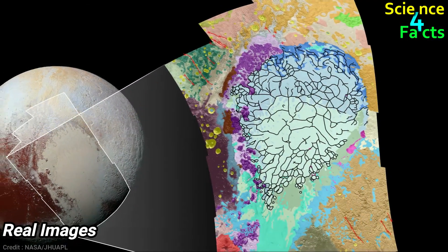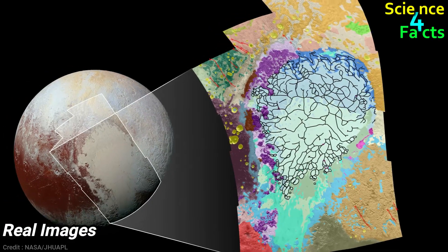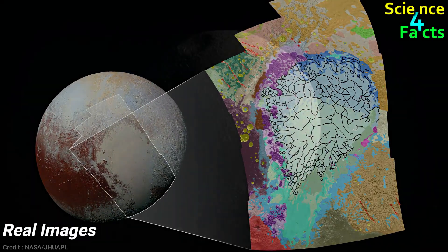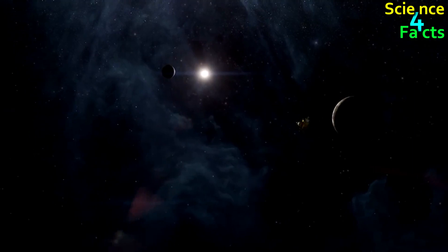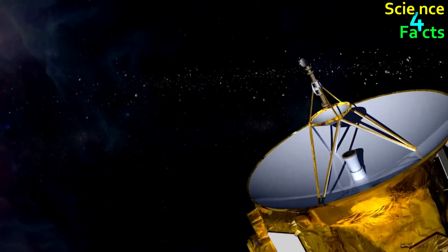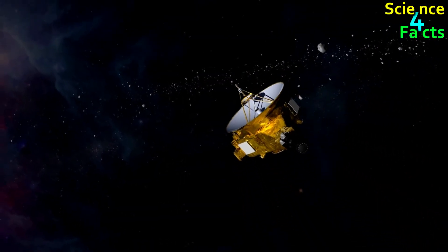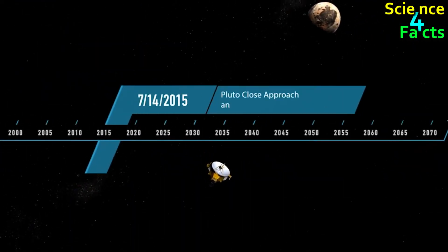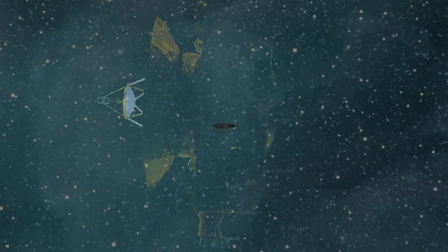Overall, the surface of Pluto is solid and composed of a variety of frozen ices, with geological features that were formed by impacts and tectonic activity. The observations made by the New Horizons spacecraft have greatly increased our understanding of this distant and enigmatic world.